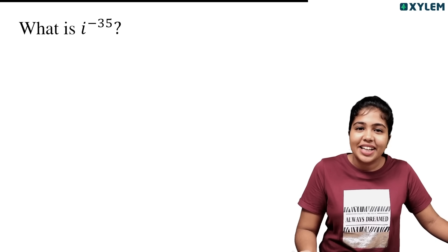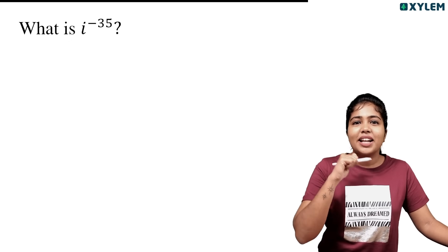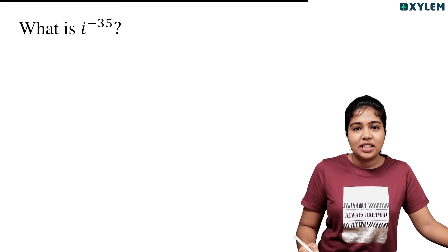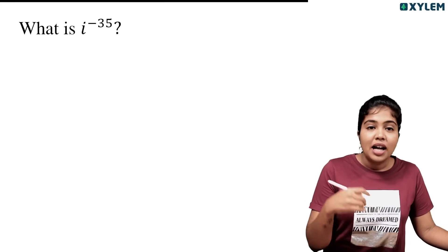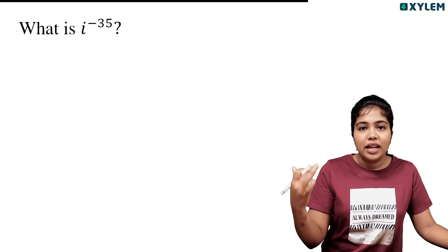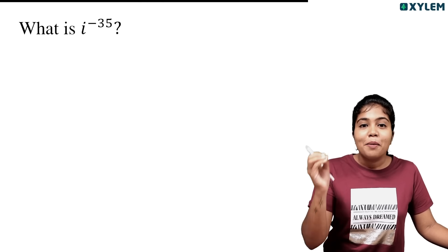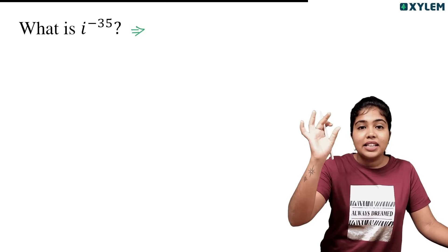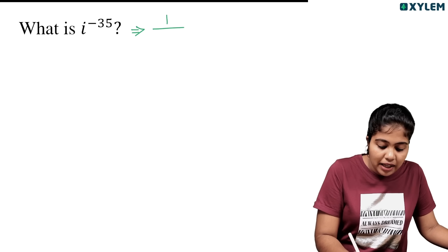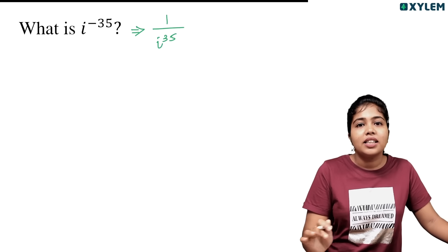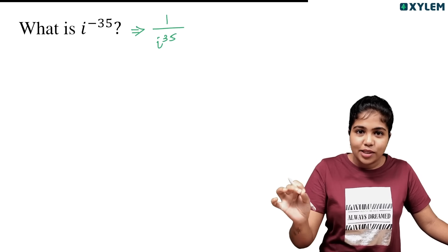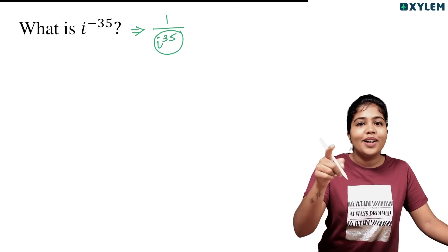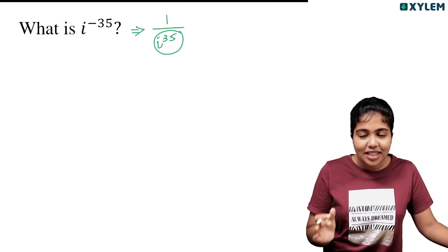Second question: i raised to minus 35. If the power is negative, this is how we handle it. For i raised to minus 35, the first step is to convert the negative power: write it as 1 divided by i raised to 35. Then, i raised to minus 35 equals 1 by i raised to 35. Now apply the same concept as before.